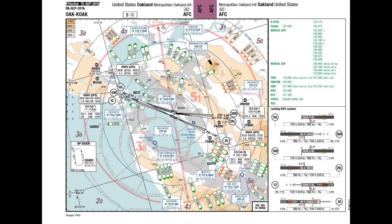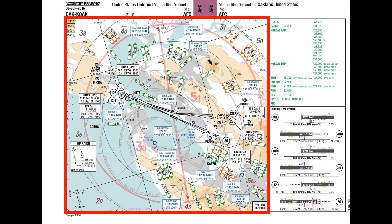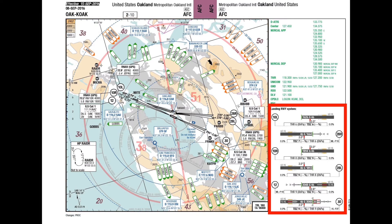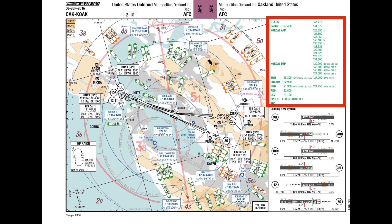The AFC consists of the following components: Plan View, Landing Runway Information, and Airport Communication Information.